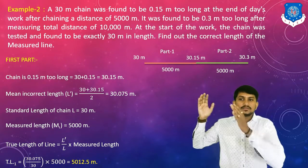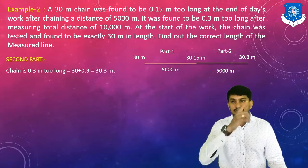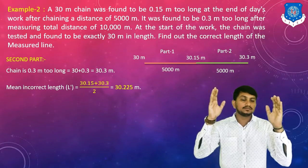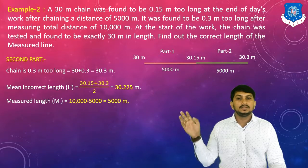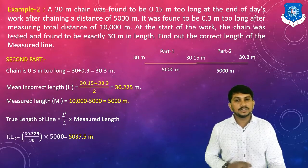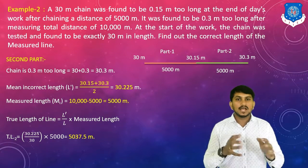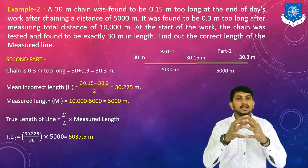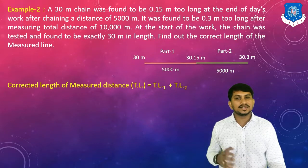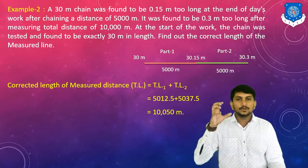For the second part, chain is 0.3 meters too long, so the length at the end is 30.3 meters. The mean incorrect length is the average of 30.15 and 30.3, because two measurements are taken. Measured length is 5,000 meters. TL2 = (30.225 / 30) × 5,000 = 5,037.5 meters. Adding TL1 and TL2, the correct total length of the measured line: TL = 5,012.5 + 5,037.5 = 10,050 meters.